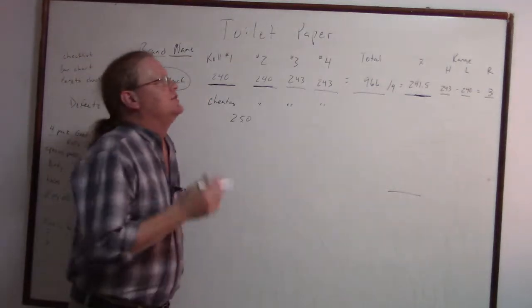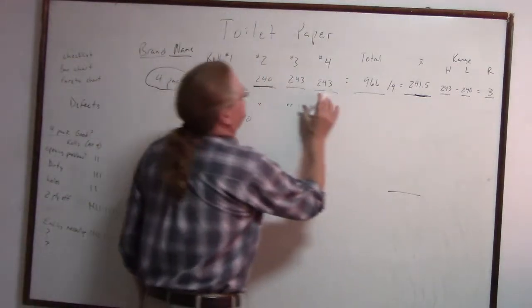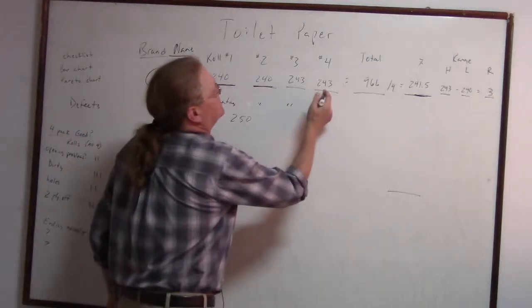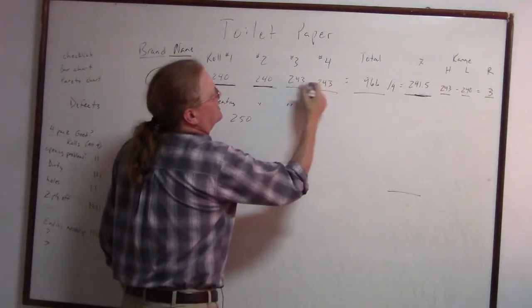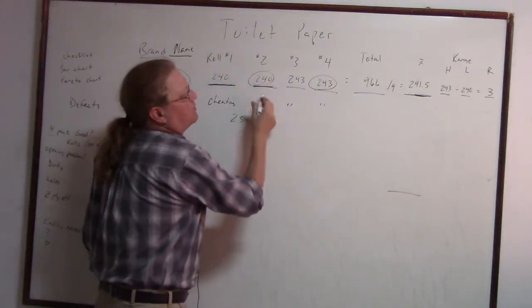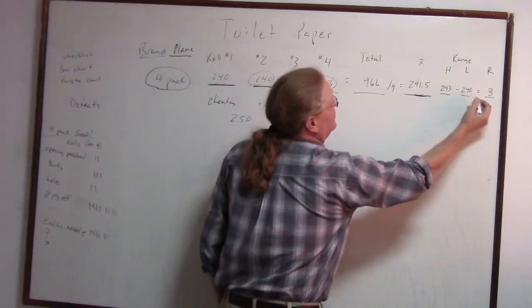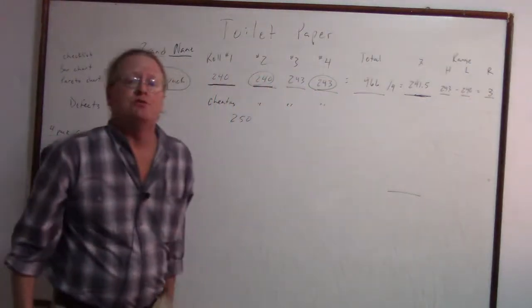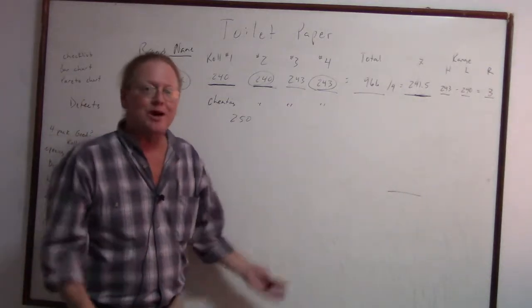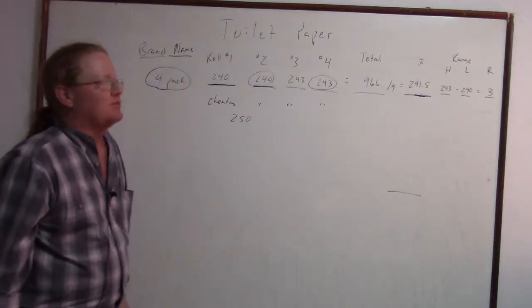They're just cheating the customer. Now, another thing that we need to do is find the range of the toilet paper. So in this case, we need to find the highest number and the lowest. Our highest number was a tie at 243. Our lowest was a tie at 240. So we have 243 minus 240 equals a range of three. That's pretty tight. It's just in the wrong spot. It's supposed to be at 250. So they're consistent with their cheating.